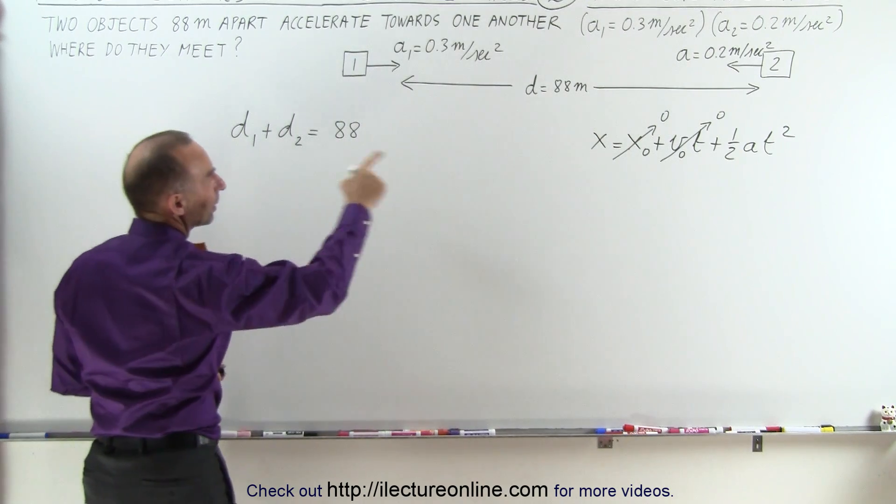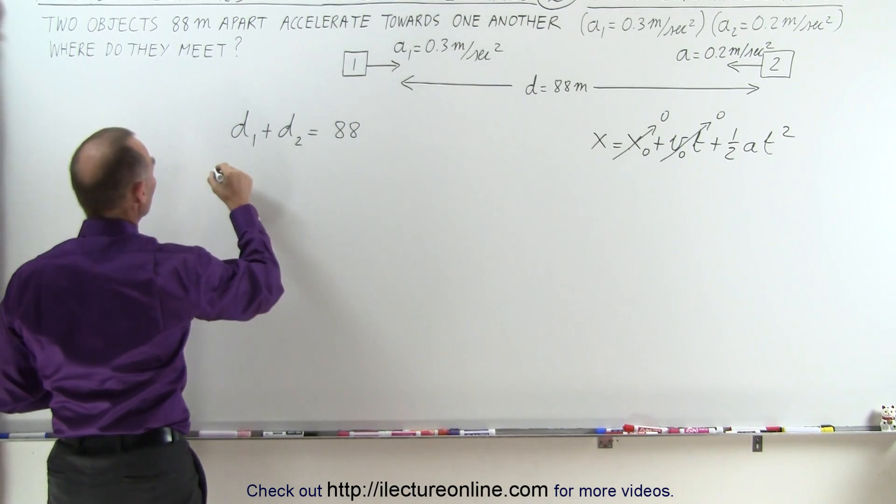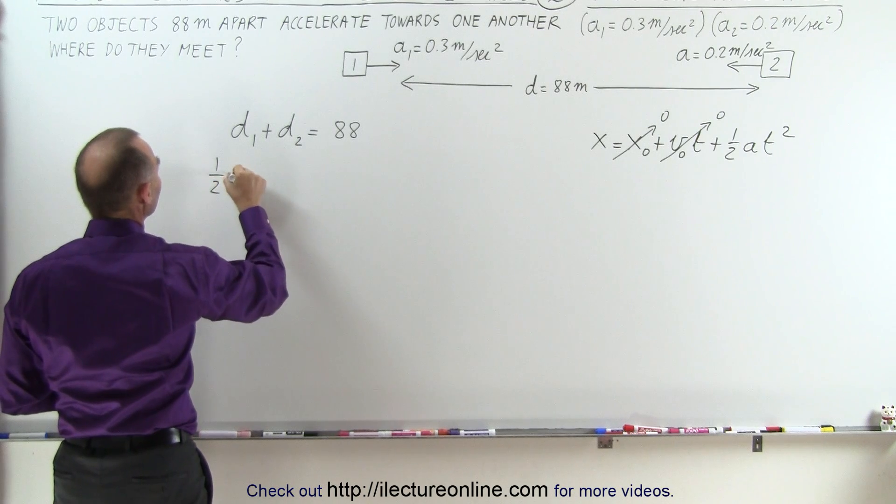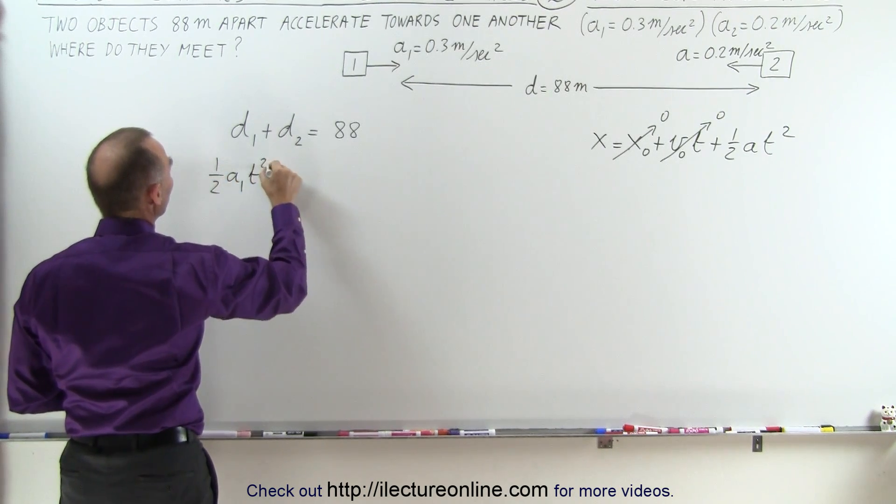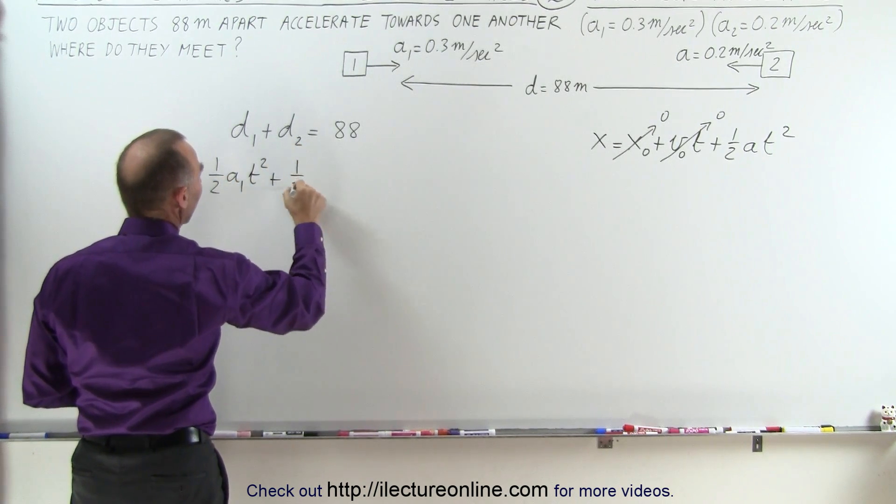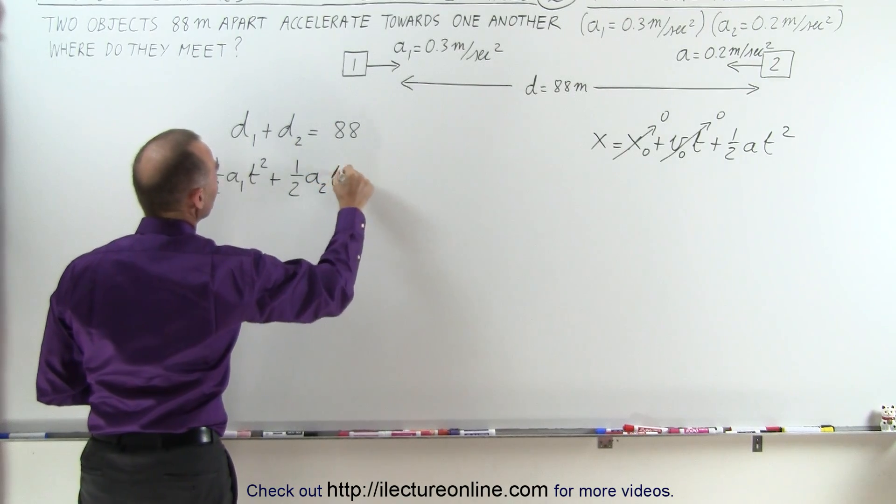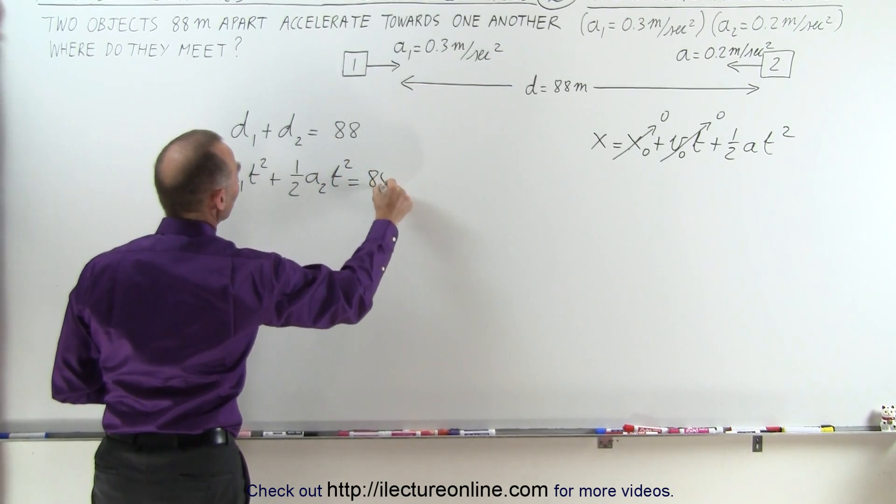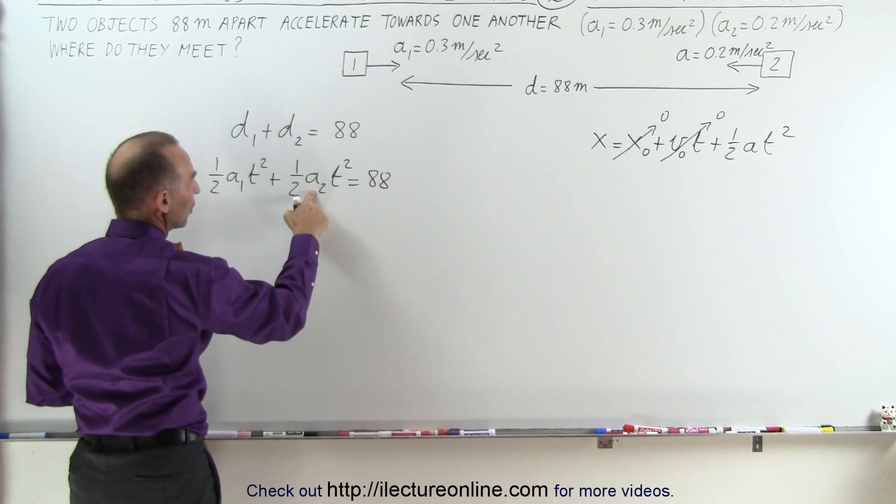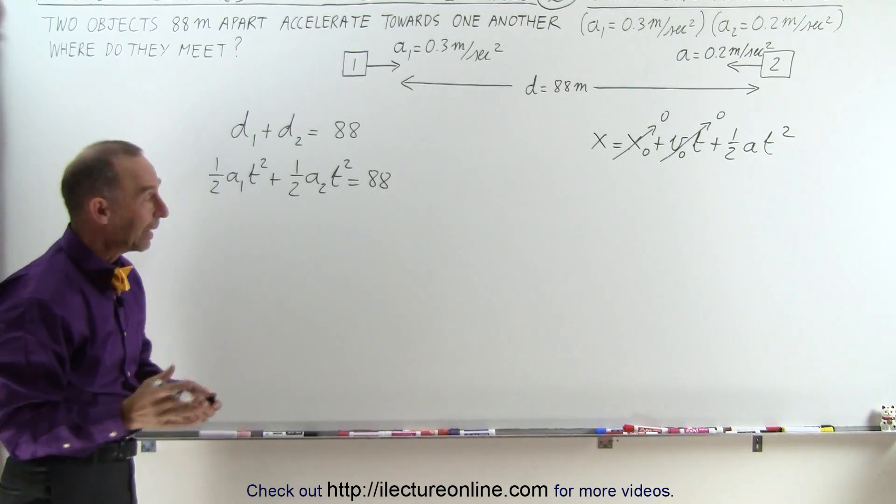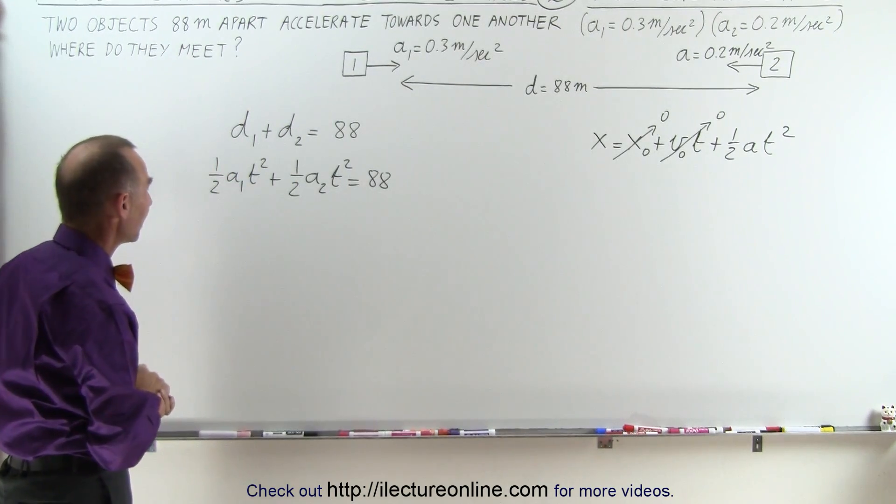Distance 1 can be written as one-half a₁ t squared plus distance 2 is one-half a₂ t squared equals 88. Since a₁ and a₂ are known, the only unknown in this equation will be time, and so we can solve this equation for time.